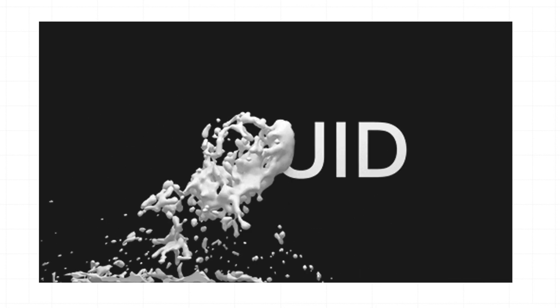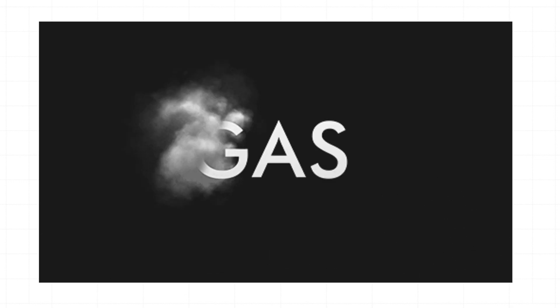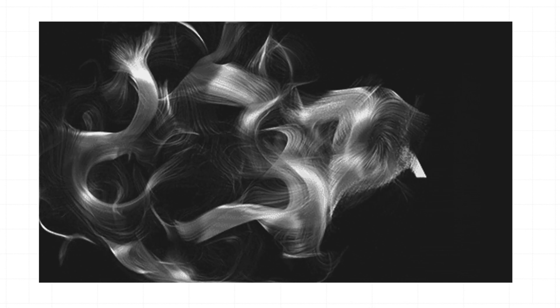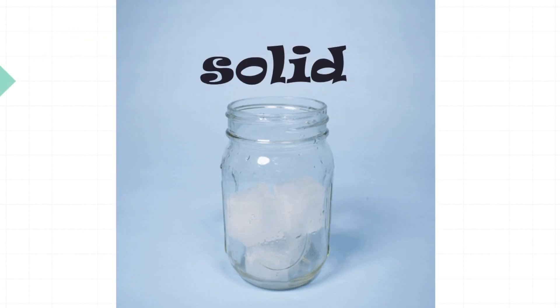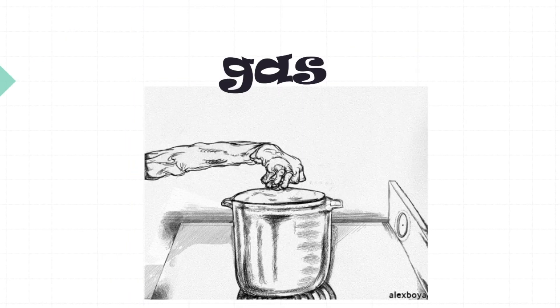What are the states of matter? Solid. Liquid. Gas. Plasma. The states of matter are solid, liquid, gas, plasma.